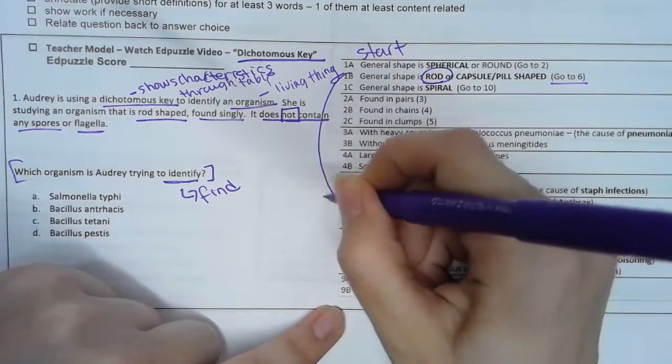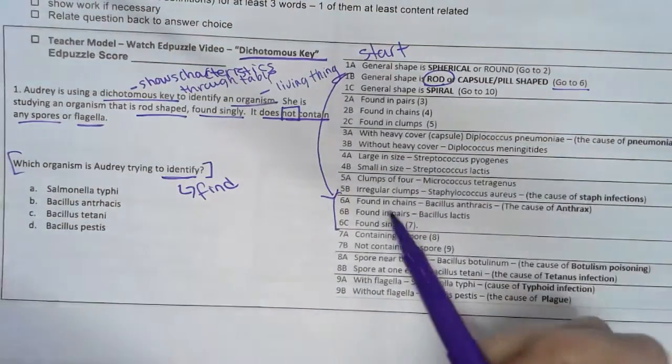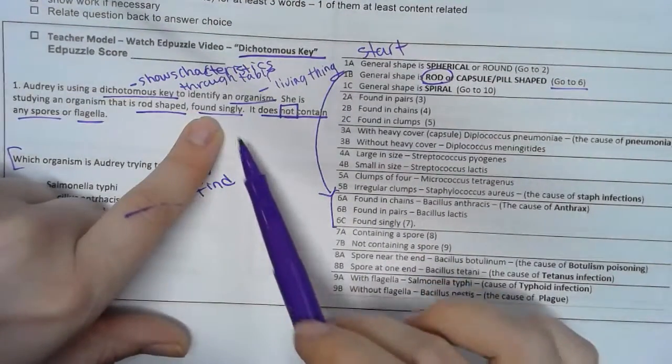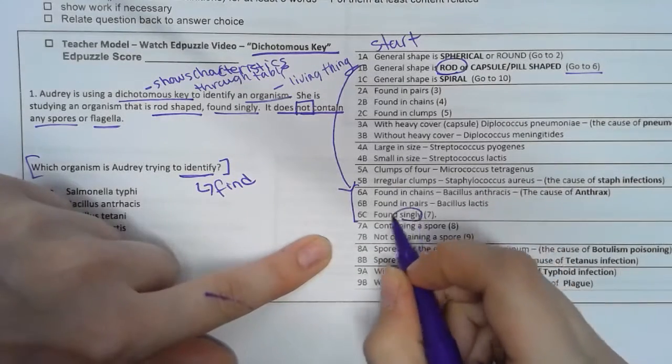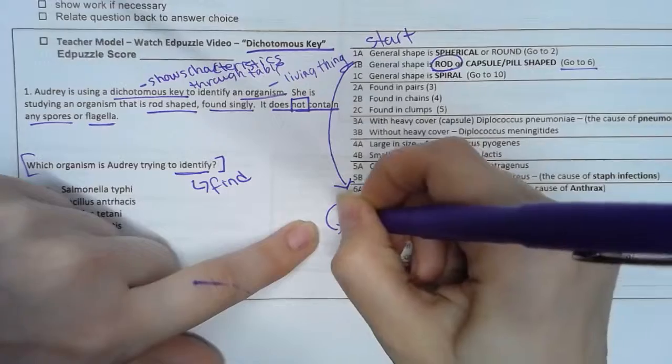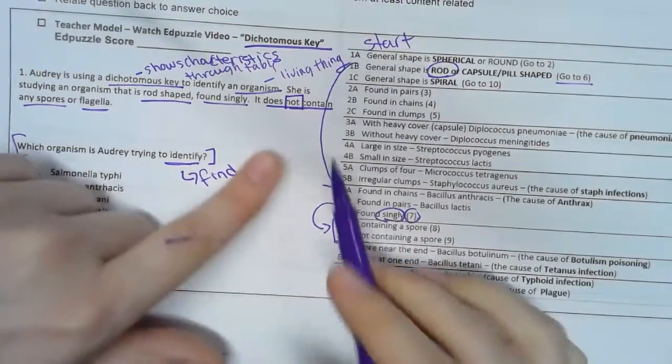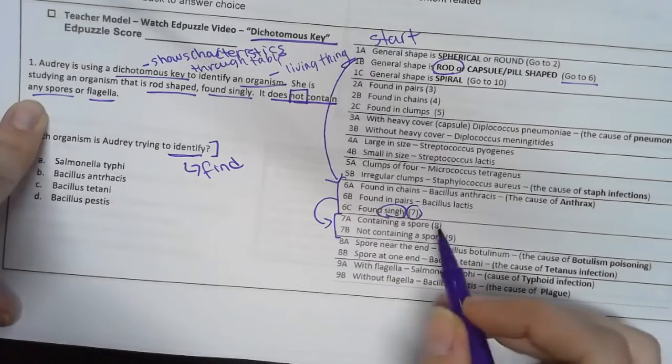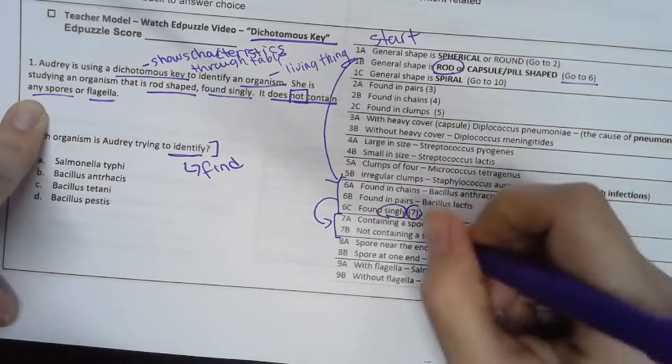All right, step six. Now I have to see how it's found. Found singly - this little seven tells me that I need to go to step seven. Oh look, it's right here, step seven. All right, now I look: it does not contain any spores. Containing a spore - no, not containing a spore. This is my winner. Not containing a spore, I need to go to nine.